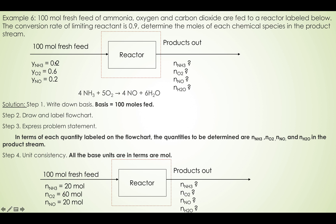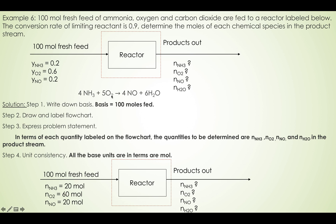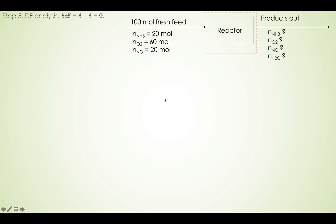For example, mole fraction of ammonia 0.2 times 100 gives 20 moles in the fresh feed. Do the same for the other two species. Step five: degree of freedom analysis. Degree of freedom equals the number of unknown variables minus the number of known equations. In this problem there are four unknowns, and from the reaction we have four species, so four minus four equals zero. Degree of freedom is zero, which means the problem is solvable.